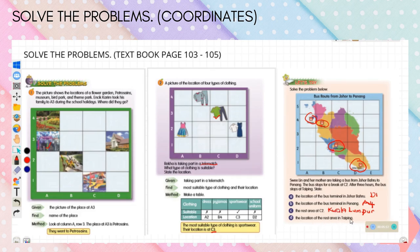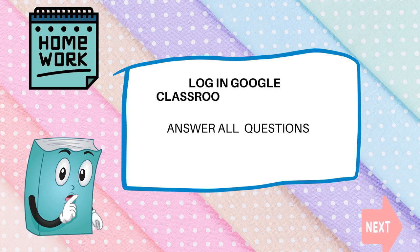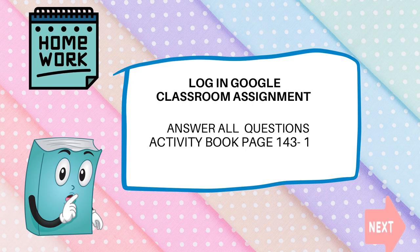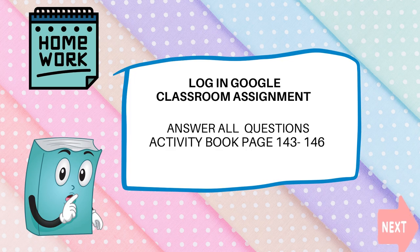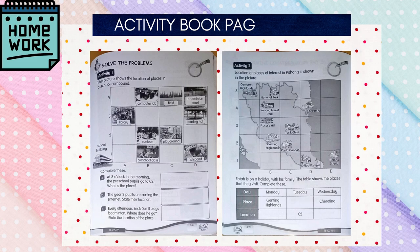The location of the rest area in Taiping: this is the location of the bus area in Taiping. B for column, 4 for row — so the answer is B4.